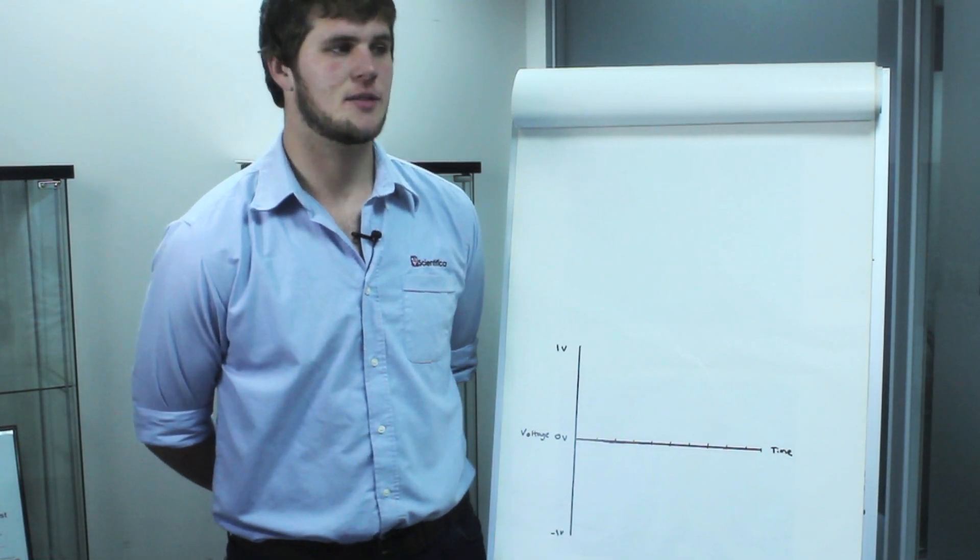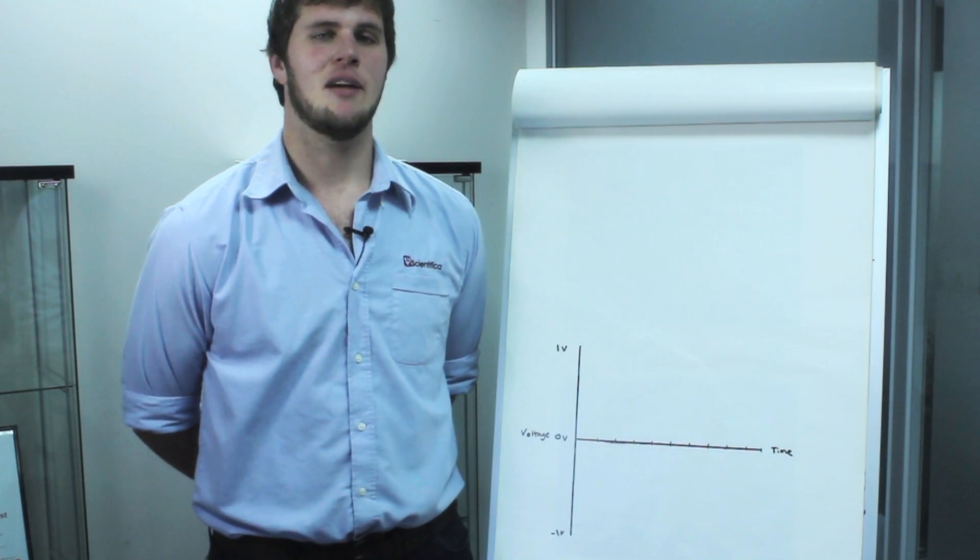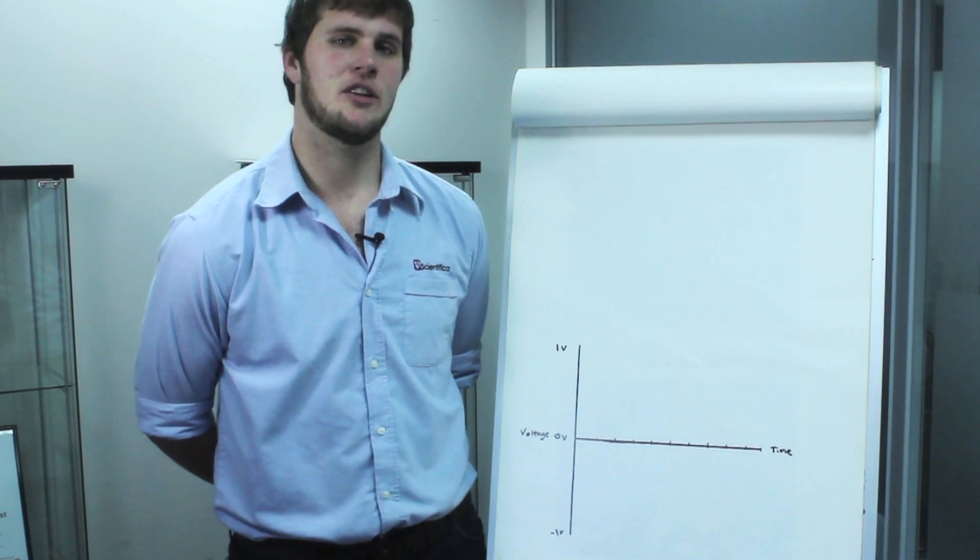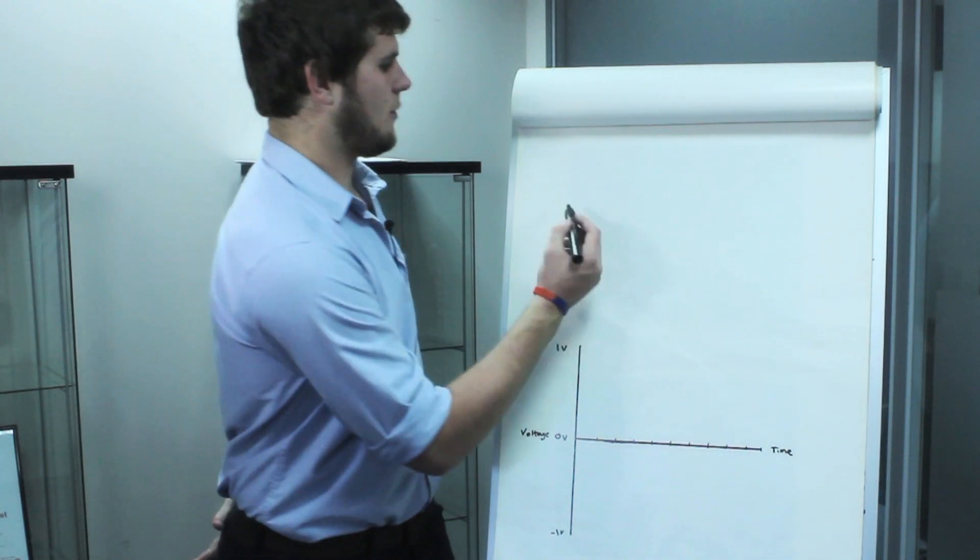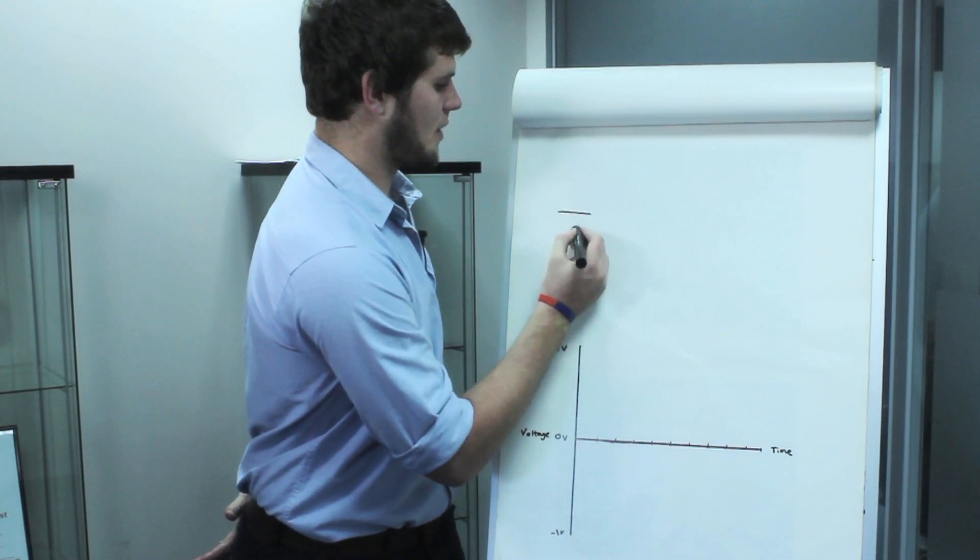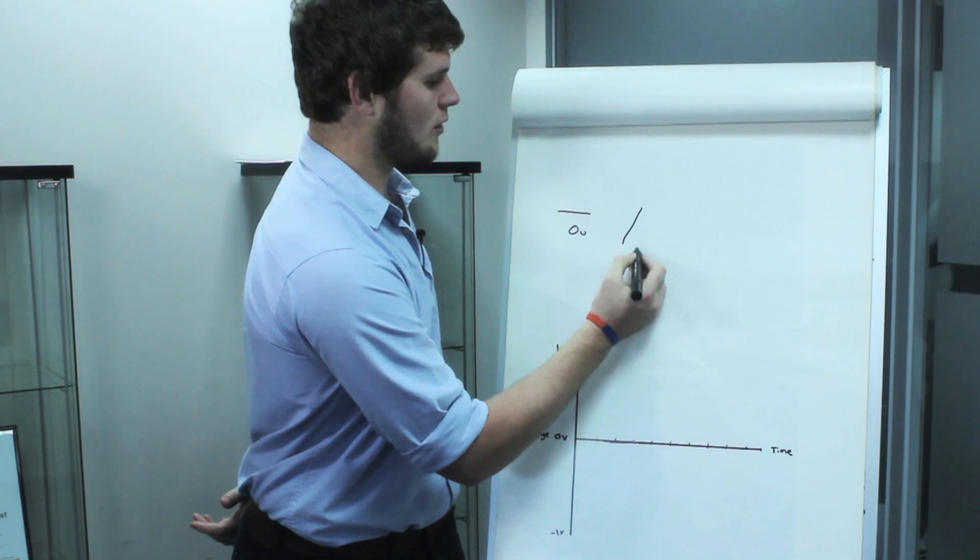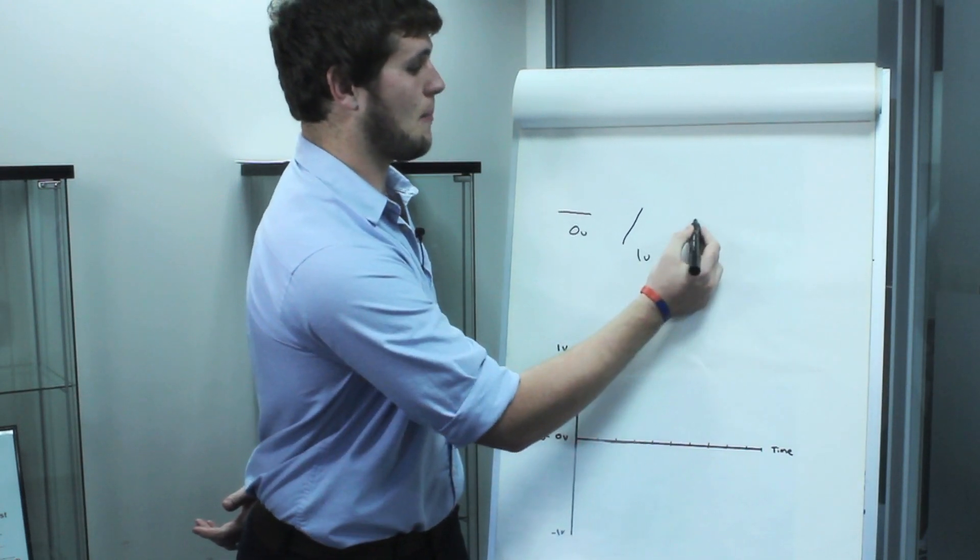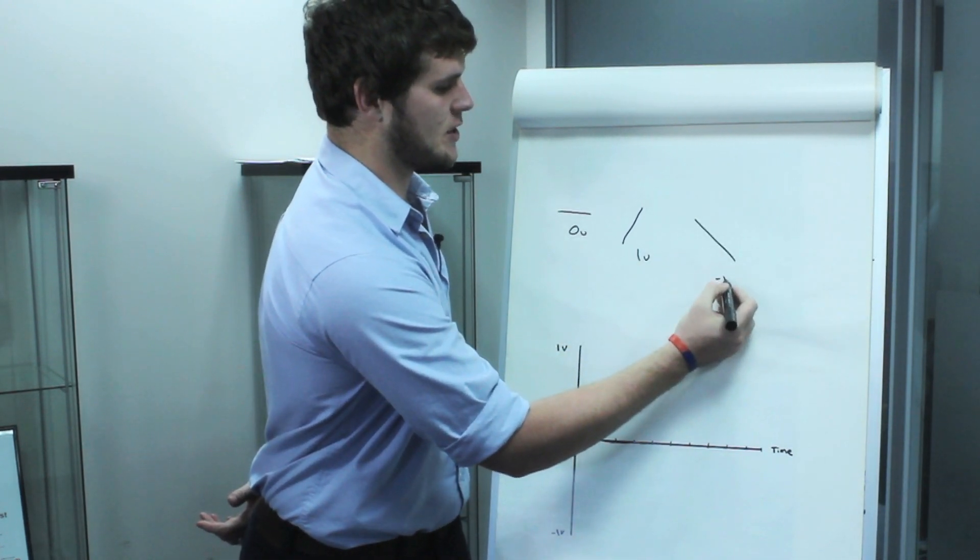I'll start with Galvo Mirrors. A Galvo mirror is a mirror that will rotate to an angle dependent upon the voltage you give it. So if you were to give a mirror zero volts, it might be in this position. If you were to give it one volt, it might be in this position. If you could give it minus one volt, it might move to this position.